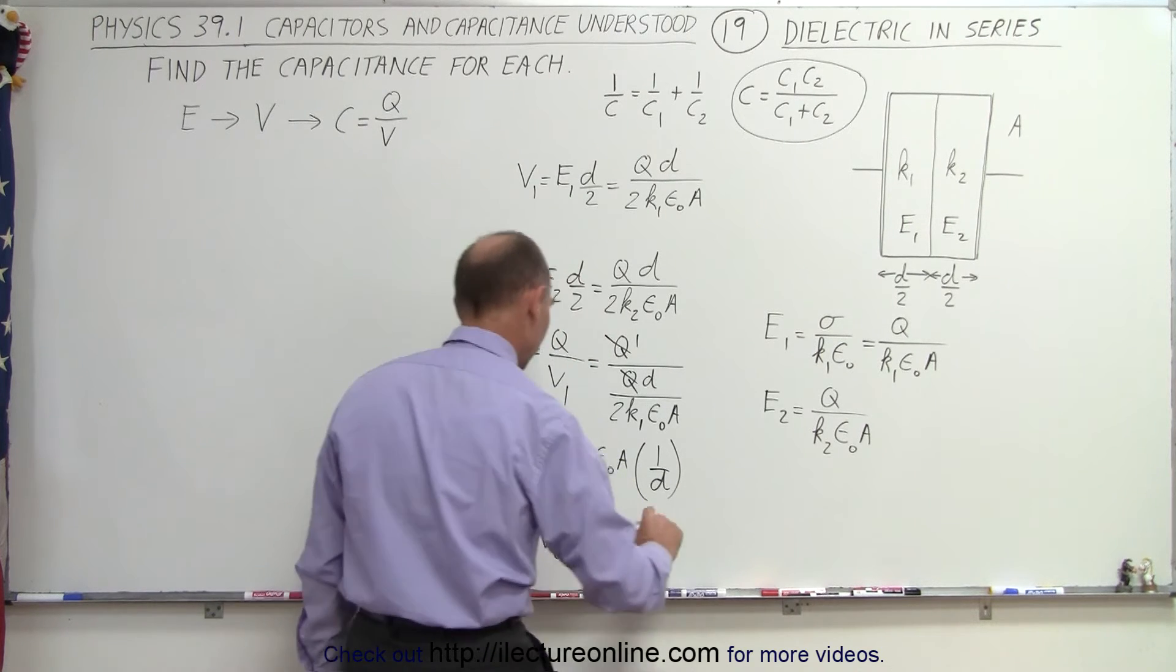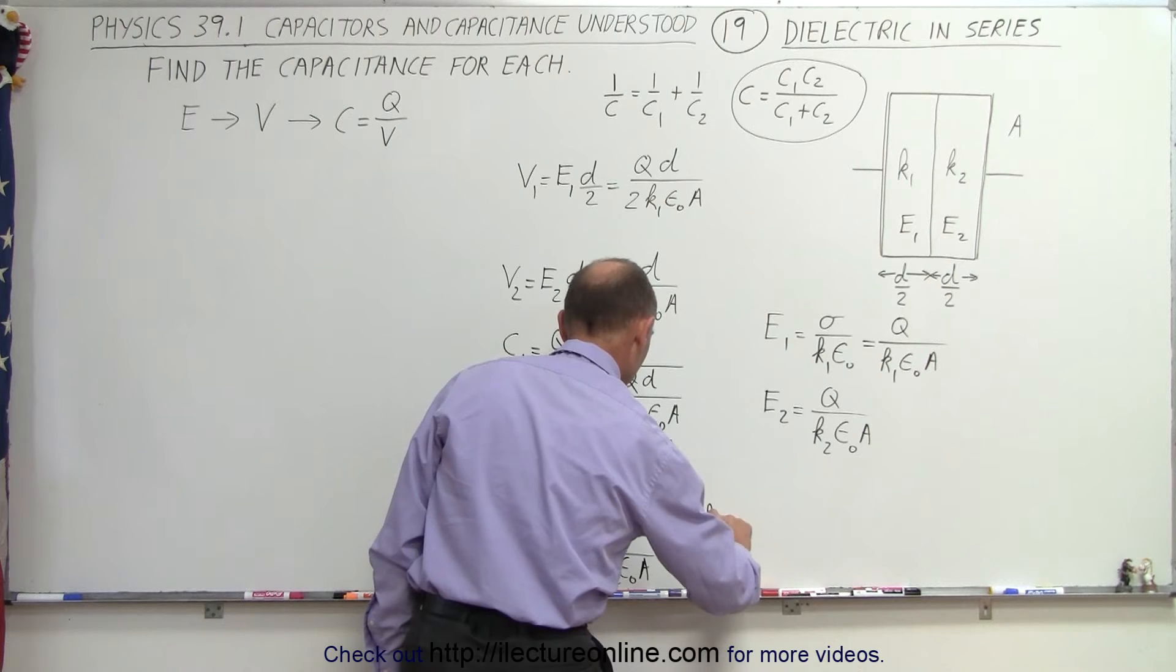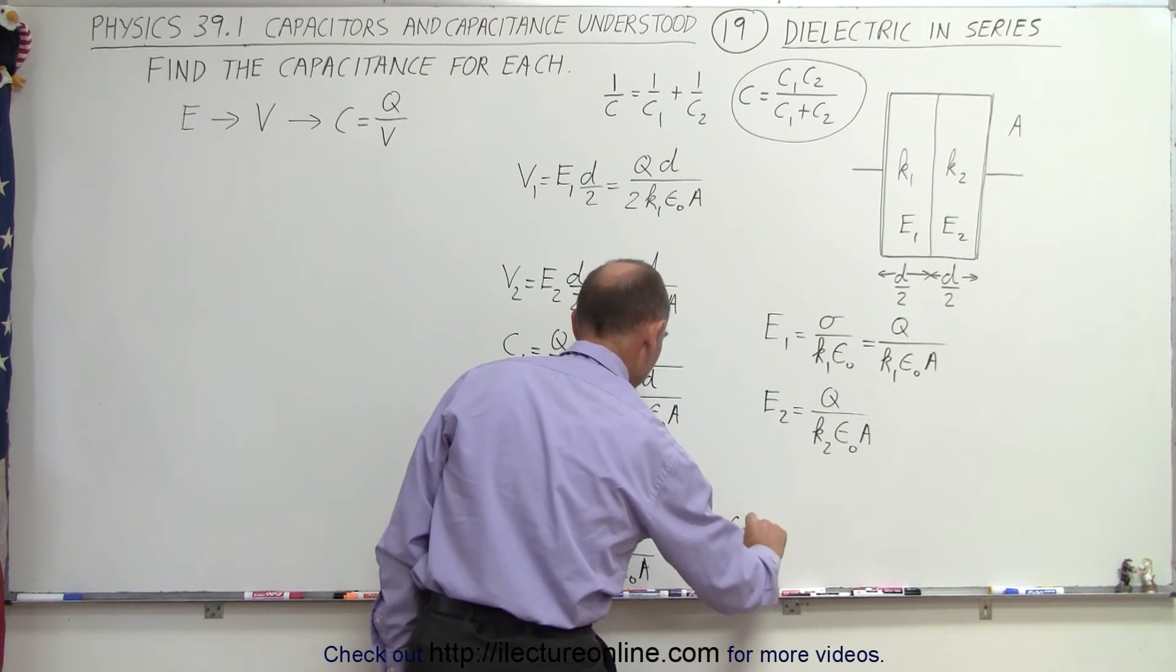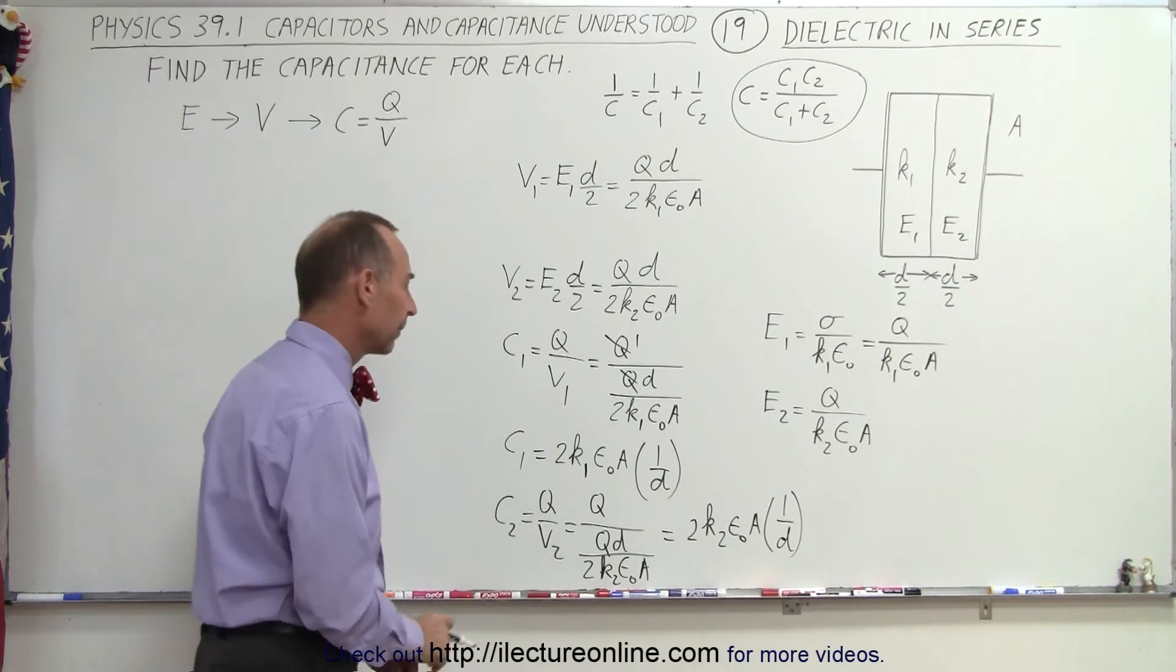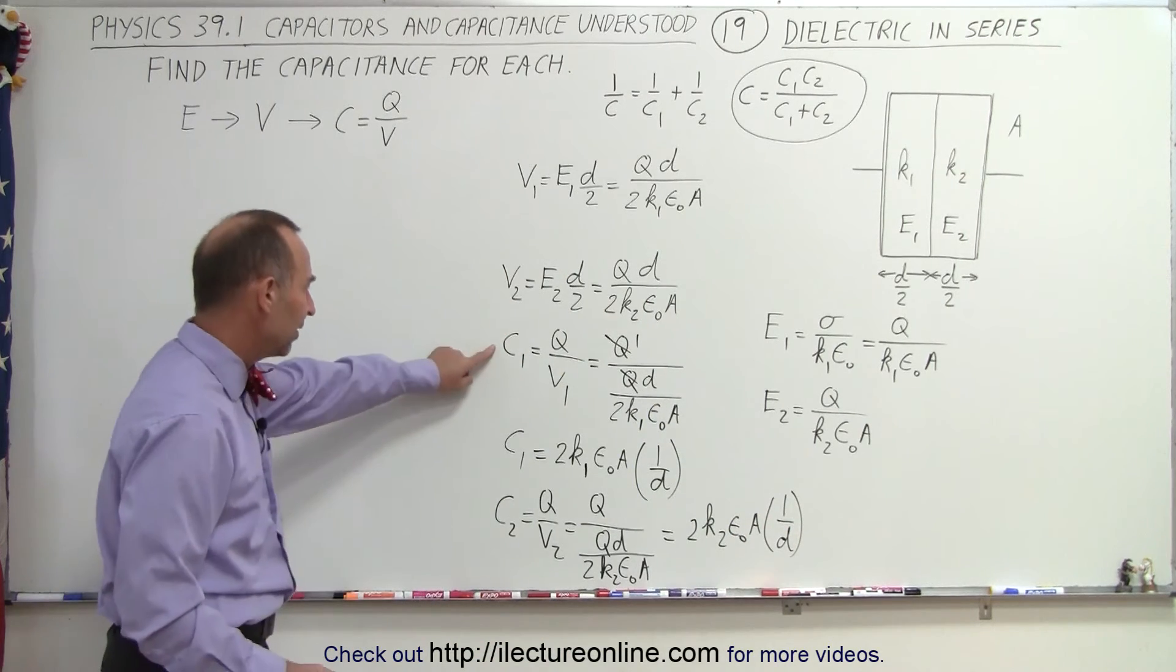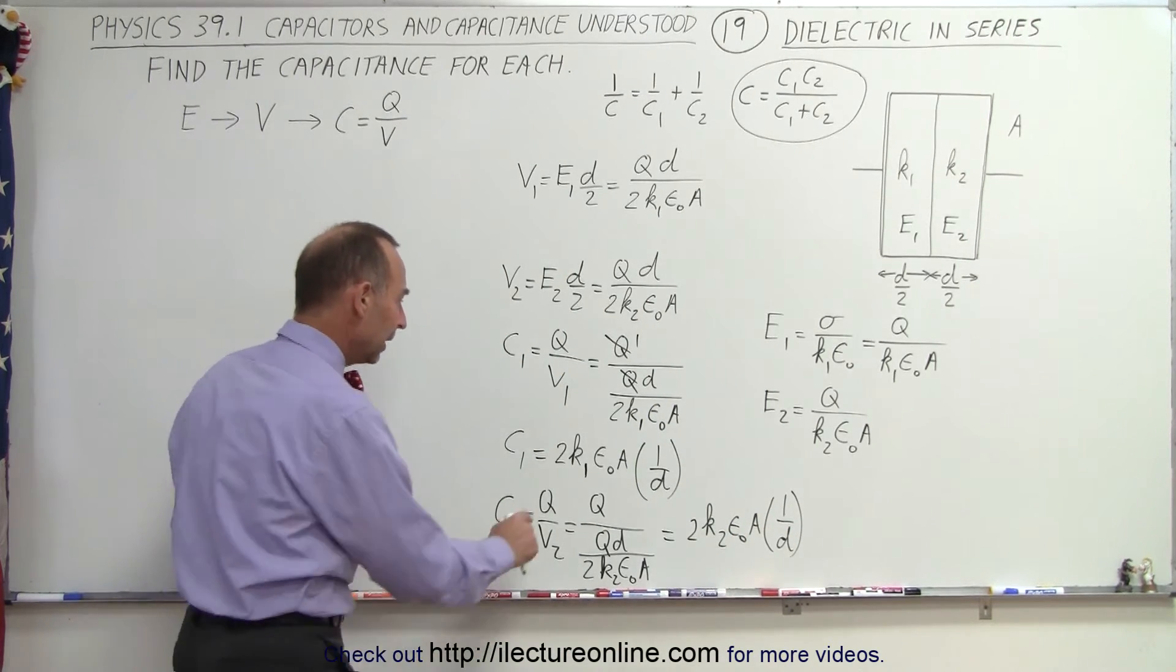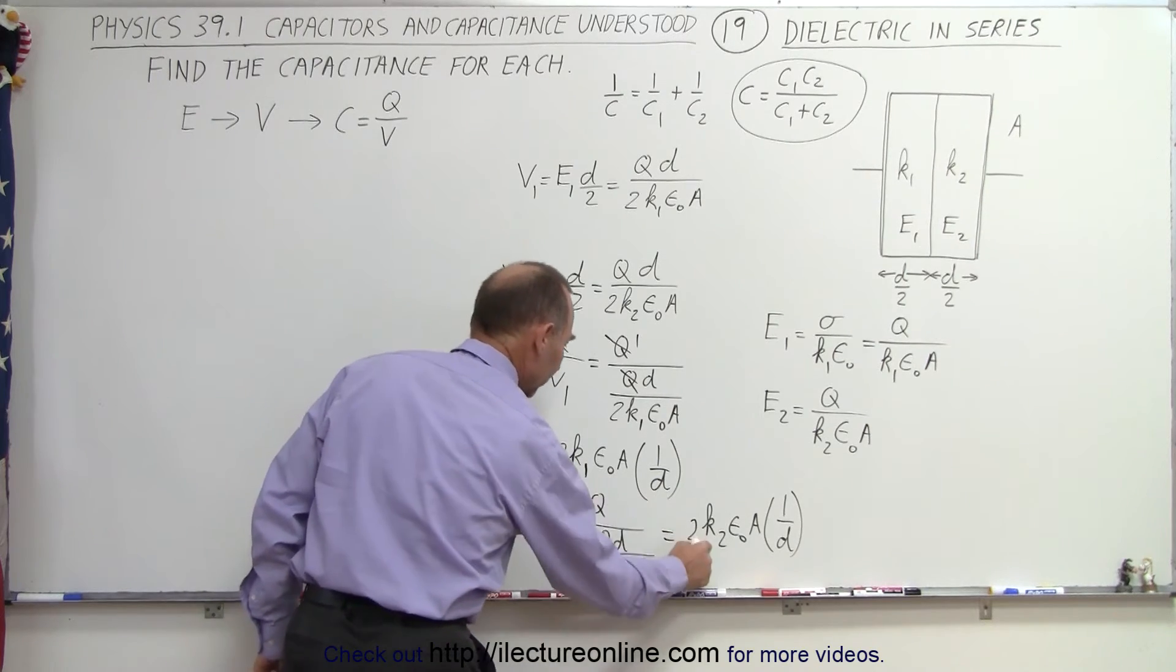And so this can then be written as 2 k2 epsilon naught A times 1 over d. So the only difference between C1 and C2 is the dielectric constant right here.